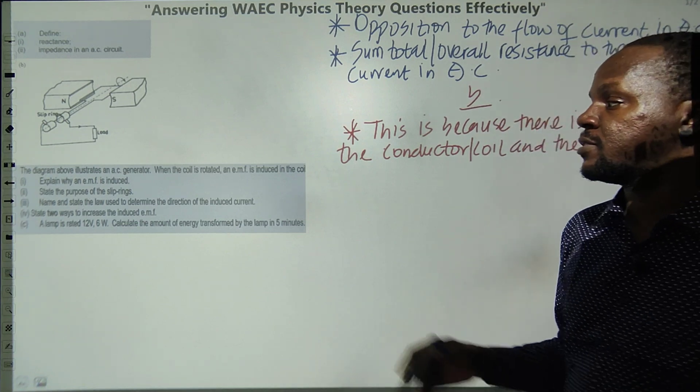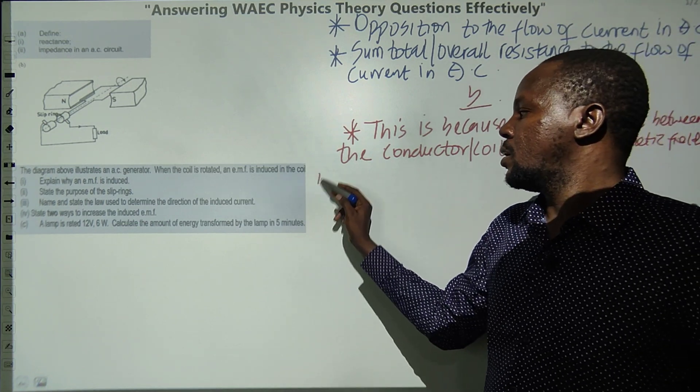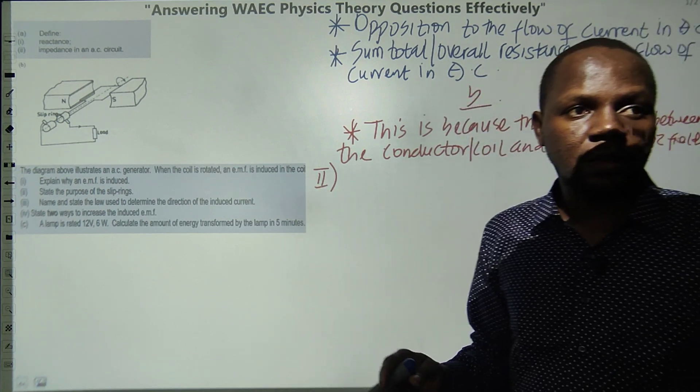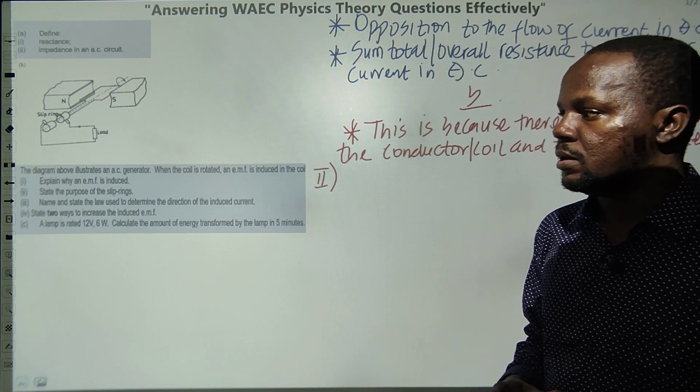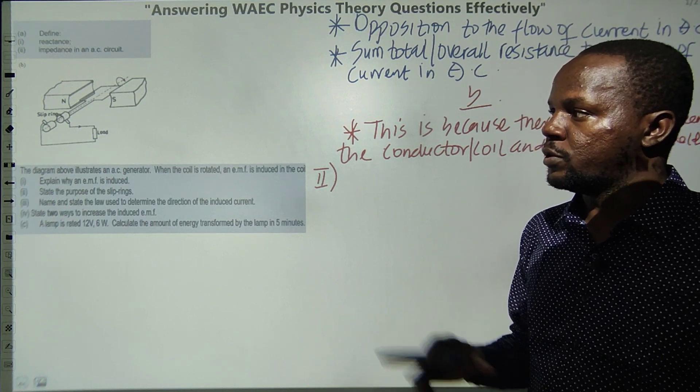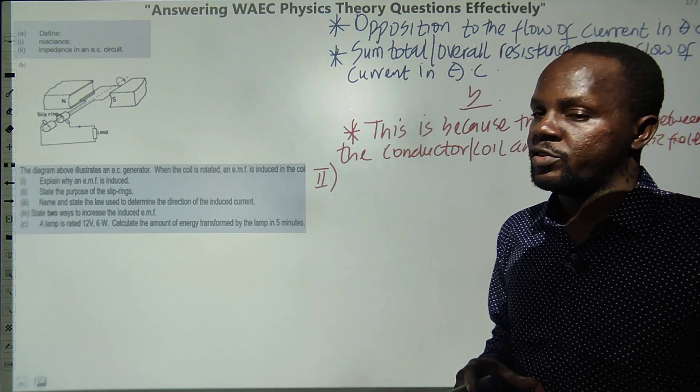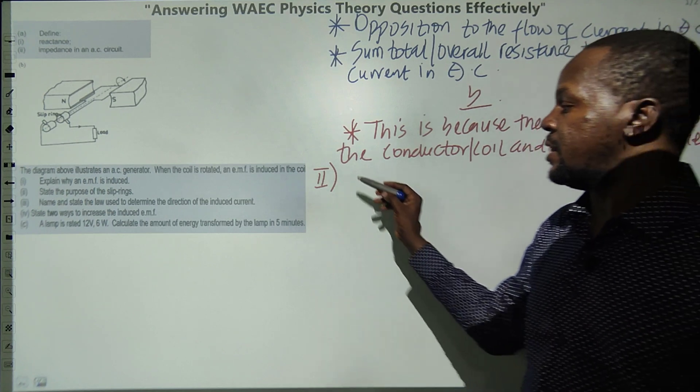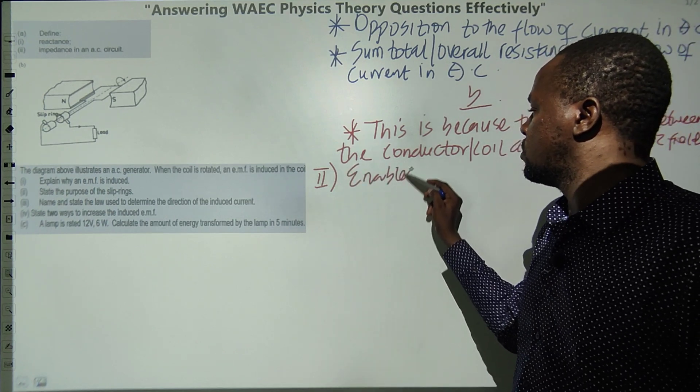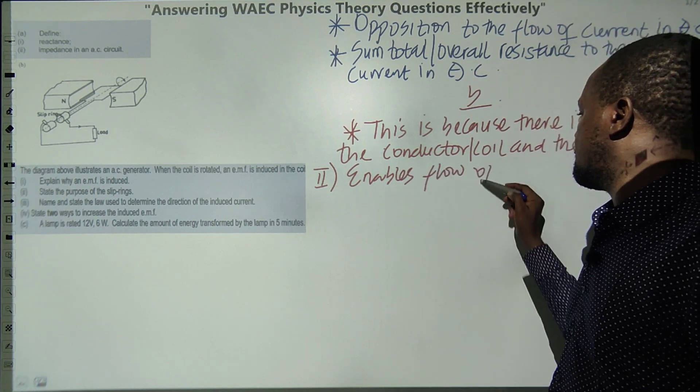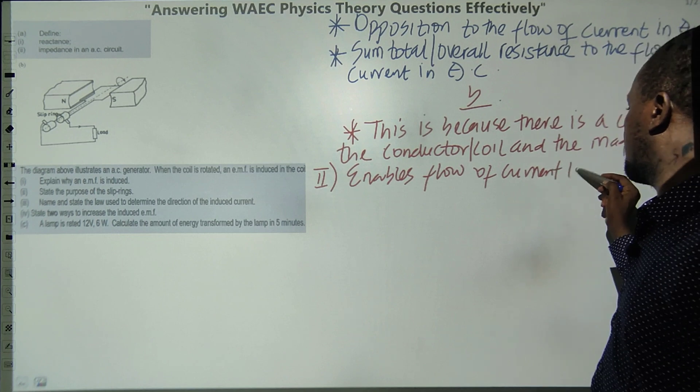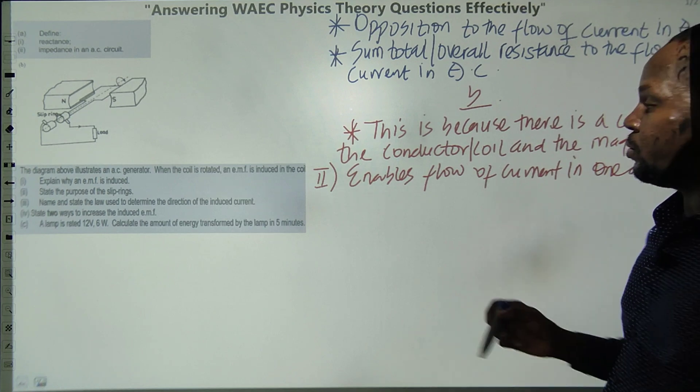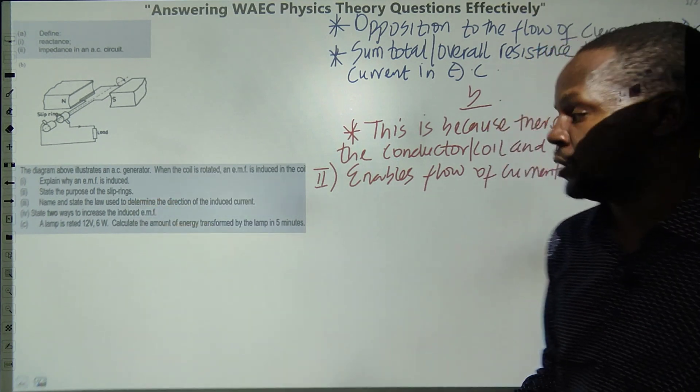The next one, which is Roman numeral two, says you have to state the purpose of the slip ring. The purpose of the slip ring is just to make the current or the direction of rotation be flowing in one direction. So it enables the flow of current in one direction. I think this is better, and if you are writing it in another language it is also acceptable.